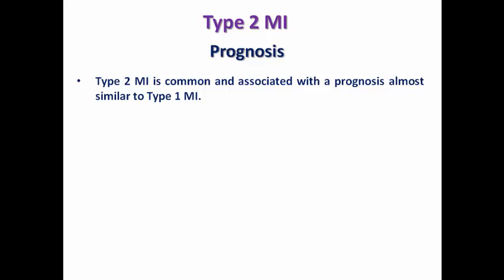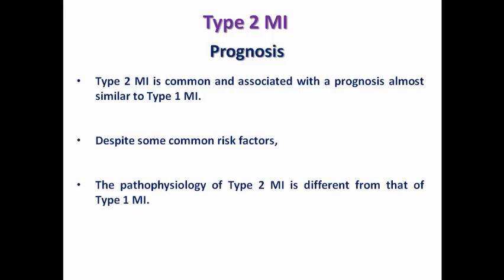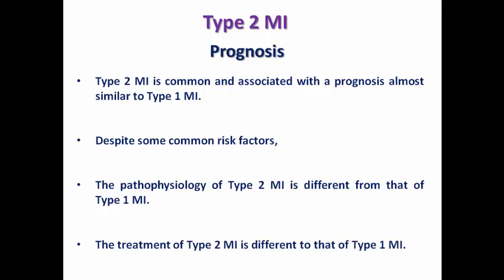Type 2 MI is very common since non-coronary mechanisms like hypoxia, hypotension, and anemia are frequent in clinical practice. It carries the same prognosis as type 1 MI caused by coronary atherothrombosis. However, the pathophysiology differs: type 2 is supply-demand mismatch while type 1 is atherothrombosis. Treatment also differs — type 2 focuses on treating the cause, while type 1 focuses on urgent revascularization.